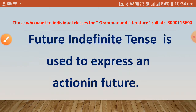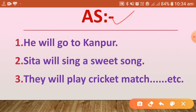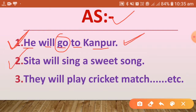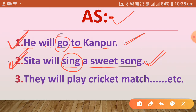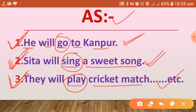Let us see some examples. Number one: 'He will go to Kanpur.' Here the going work will be done in future time, so this sentence is written in Future Indefinite Tense. Next example: 'Sita will sing a sweet song' — singing will be done in future time. Next: 'They will play cricket match' — playing will also be done in future time. That is why these sentences are written in Future Indefinite Tense.